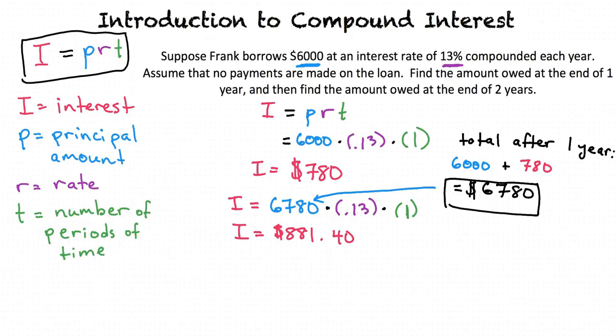Then I add $881.40 to $6,780, and the sum is the final amount owed after 2 years. $6,780 plus $881.40 equals $7,661.40. So $7,661.40 is the final amount owed after 2 years.